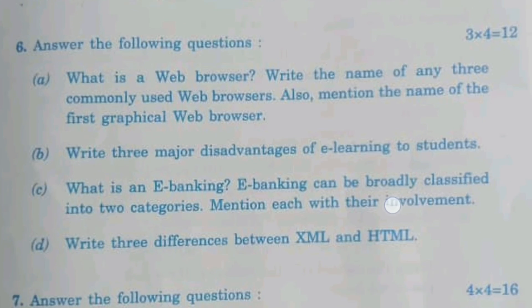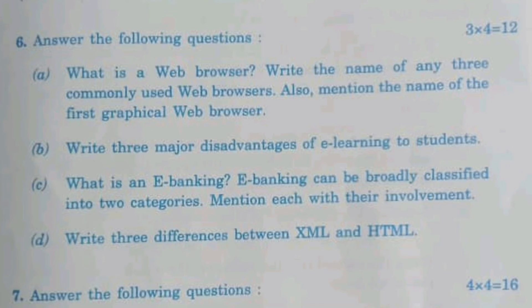What is a web browser? A web browser is a program used to surf the internet. Common web browsers include Opera, Google Chrome, and Internet Explorer. The first graphical web browser was Mosaic.